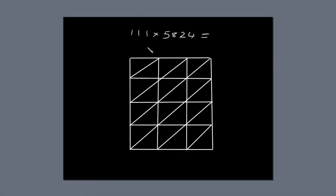Next, write the first number, 111, along the top of the box, so each digit lines up with a column. Write 5,824 down the right-hand side of the box, so each digit lines up with a row.